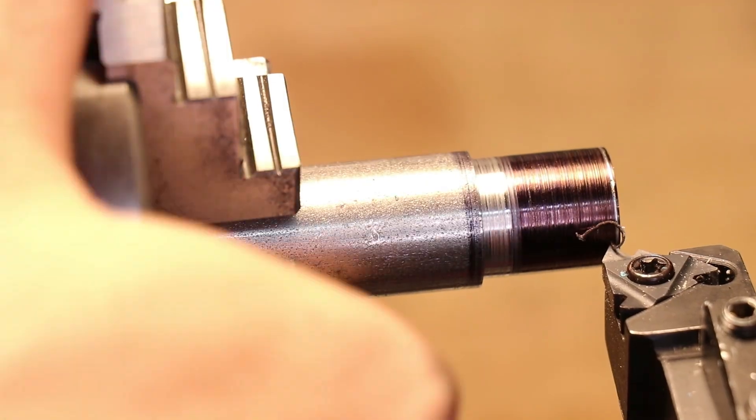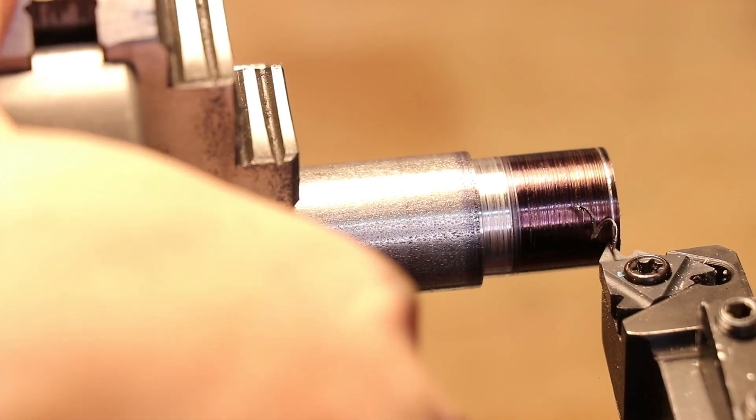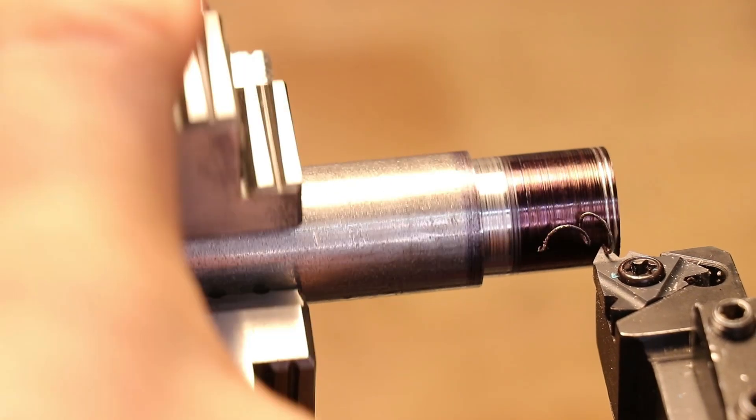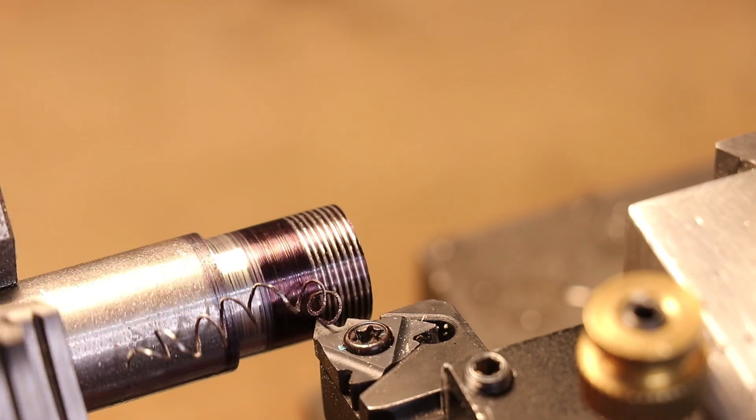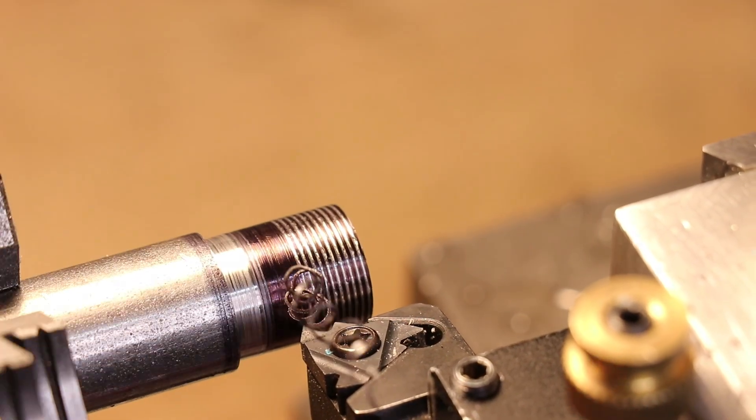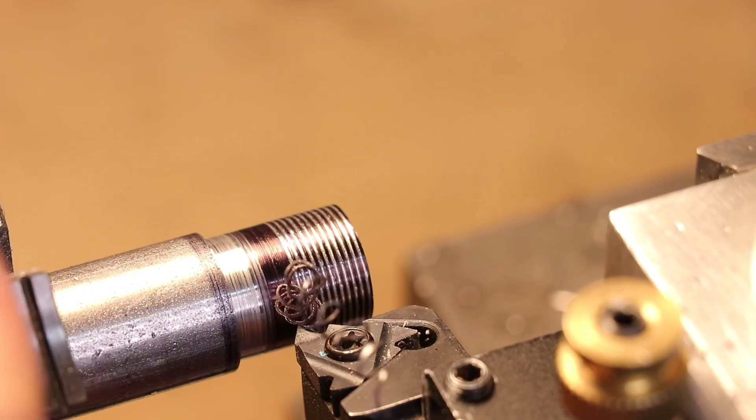Next I need to cut the threads for the nut. Since I can't set the lathe to run below 500 RPM when I would optimally be cutting the threads at below 100 I'm going to need to cut them manually. It works really well although it does take a lot longer.